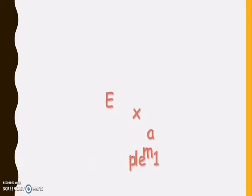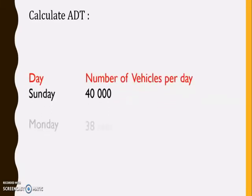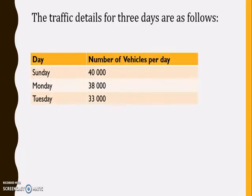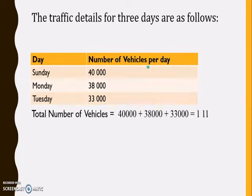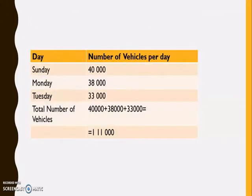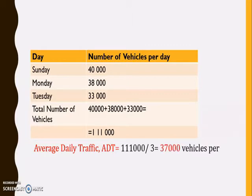For example, we can go through a small calculation. Here the number of traffic per day for 3 different days is given, and we have to calculate the ADT. What we have to do first is find the total number of vehicles on those 3 days, then divide by the number of days, that is 3, to get the average daily traffic for the selected period. In this particular case it is coming around 37,000 vehicles per day.